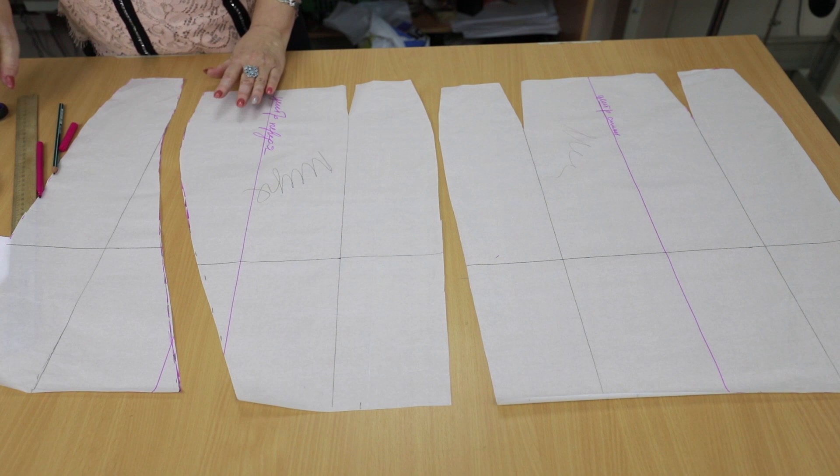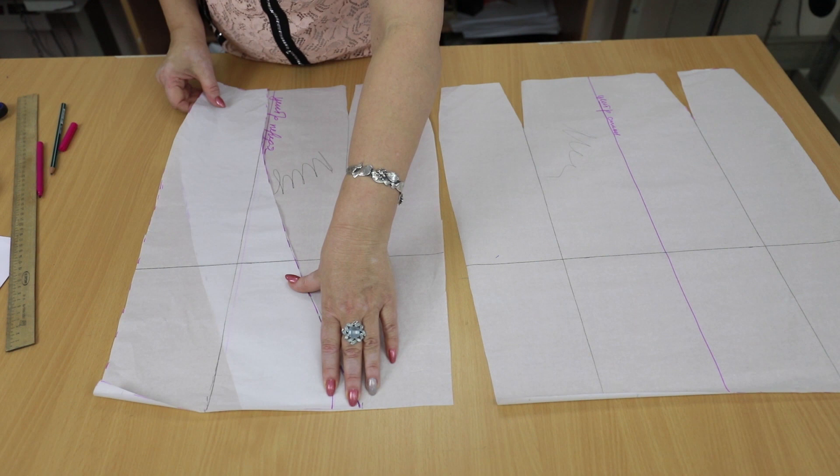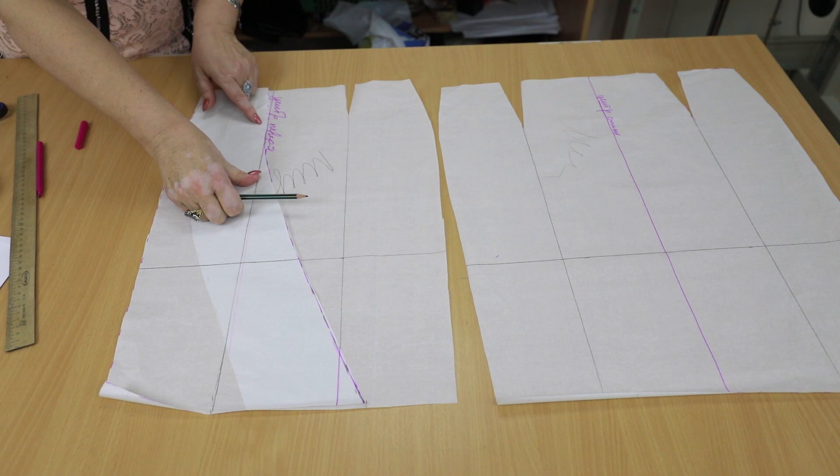The next gore goes from this point to this small line. For the lines to be equal, we put the cut-out gore here. We have a tuck on the first gore, and the line on the second one should be straight.